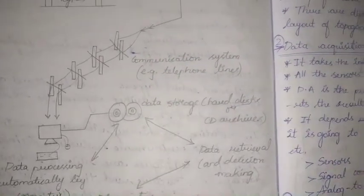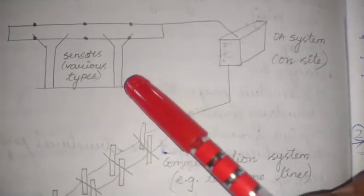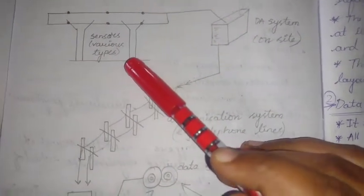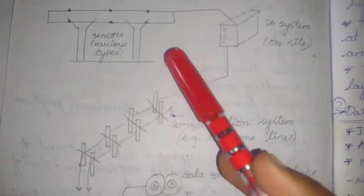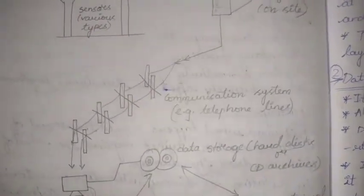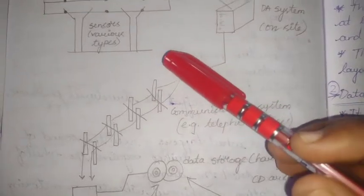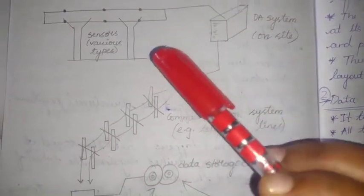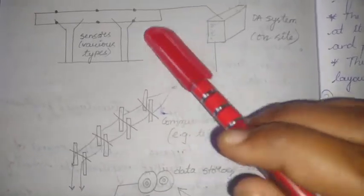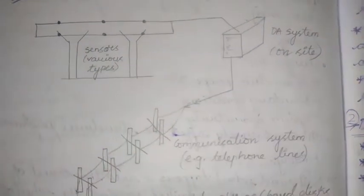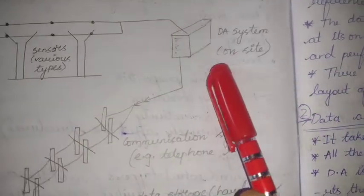Coming to the first component — sensors measure the physical quantity of the damage and send it to the computer. Sensors obtain various types of data either continuously or periodically. Continuously means collecting data at a constant rate; periodically means collecting once in a while, like once every hour, 10 minutes, or 20 minutes, depending on the time set in the sensor. The data can be used to identify damage at its onset, to assess the safety, integrity, strength, and performance of the structure.